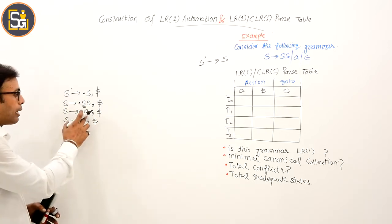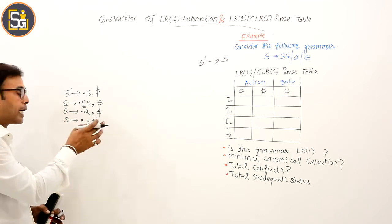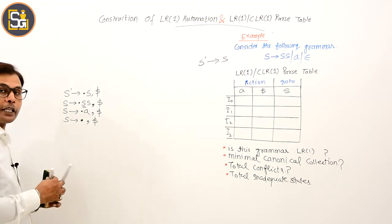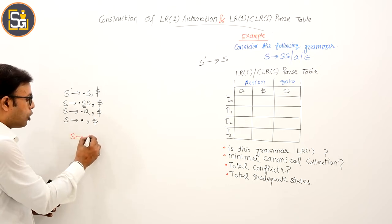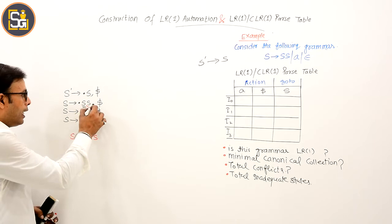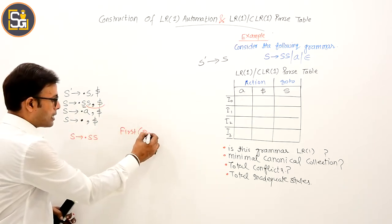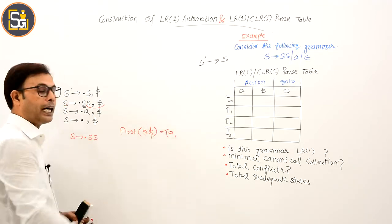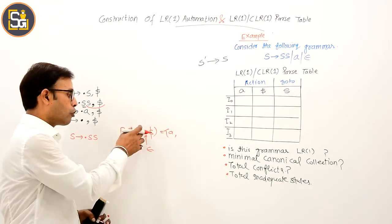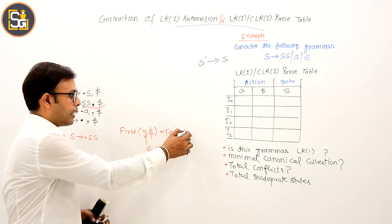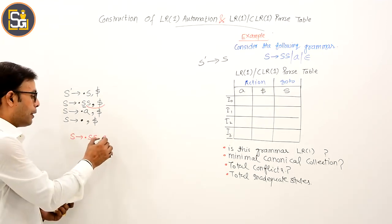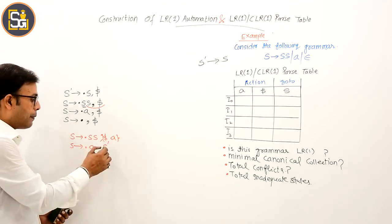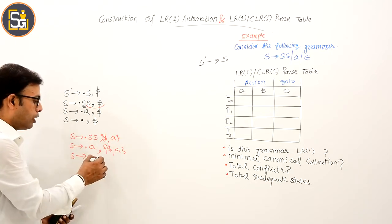अब दूसरे S को देखो — dot के बाद terminal नहीं, dot के बाद S है, तो उसका closure देखना पड़ेगा. S derived dot SS के लिए first of S dollar लेंगे. S क्या है? Terminal a. तो first में a आएगा. और जब S derives epsilon होगा तो epsilon absorb करेगा dollar, तो dollar भी आएगा. इस तरह S derives dot a और S derives dot — इन सब items में dollar और a दोनों lookahead आएंगे.